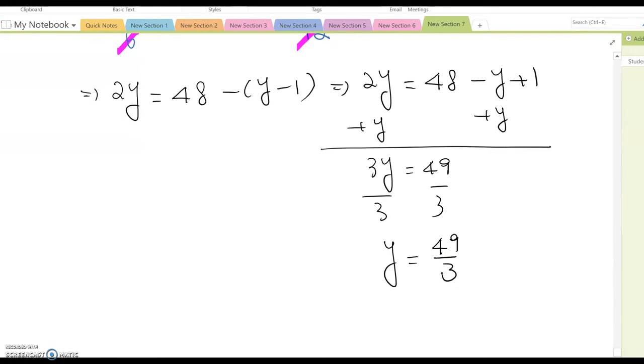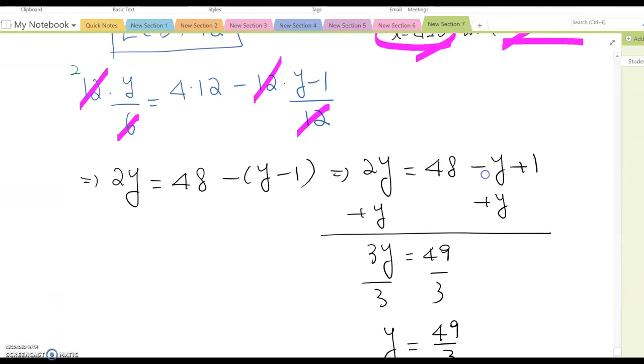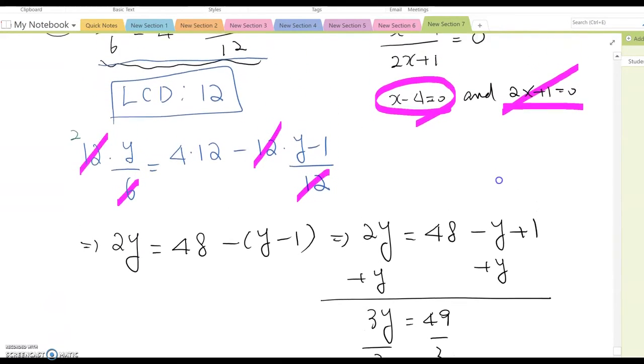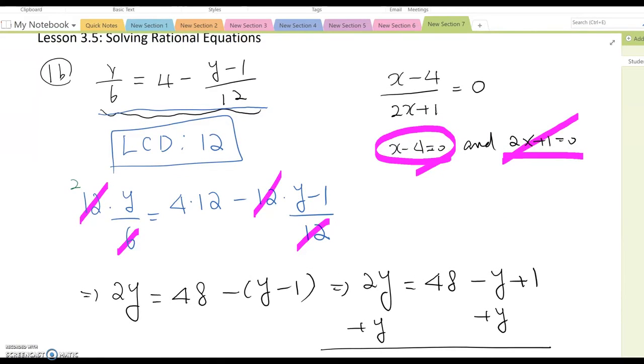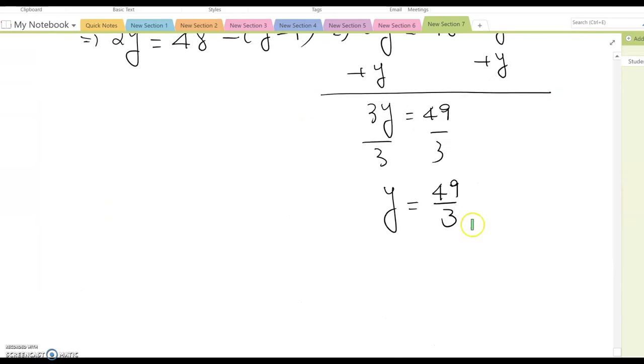However, before you move on, you must go back to the original form, whether y equal to 49 over 3 makes the original equation equal to 0. Fortunately, there is no variable expression on the denominator. Now we can confirm this is the final answer.